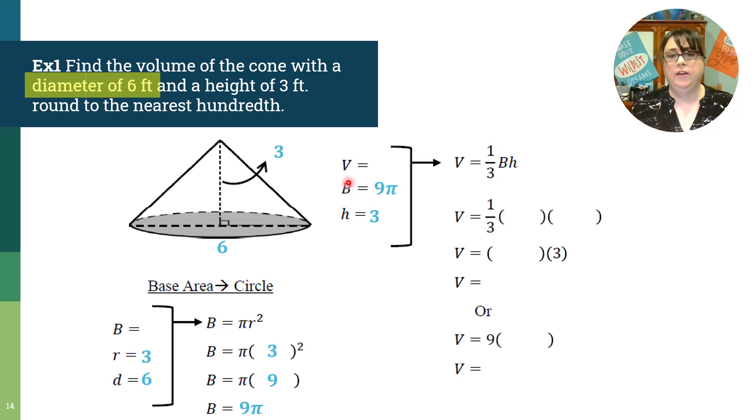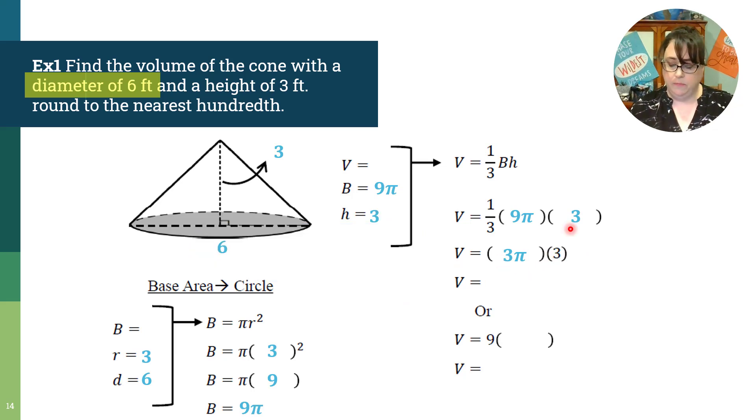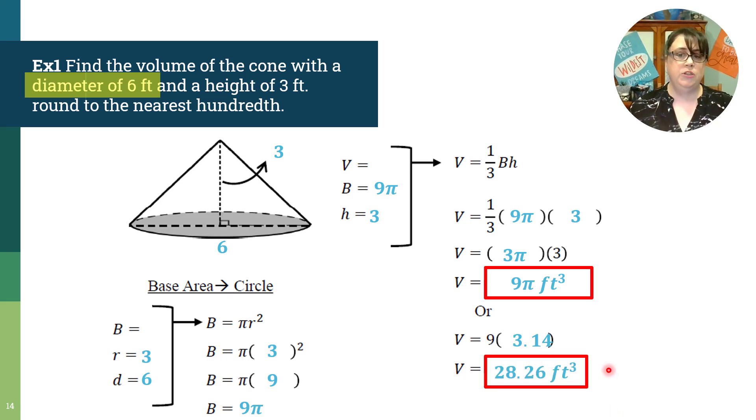And now because I only have one unknown, I have enough that I can substitute it in. So I have one third of nine pi times three. I'm going to take one third of nine pi. This is why I left it as pi, one third of nine is three. And so this here will be three pi and this three just dropped down. So now I have three times three, which is nine. And so I could call this nine feet cubed, but it said to go to the nearest hundredths. So I'm not actually done. This is in terms of pi, so I need to finish this. So I know that pi is equal to 3.14. So I'm going to substitute that in as 3.14. And nine times 3.14 is 28.26 feet cubed.